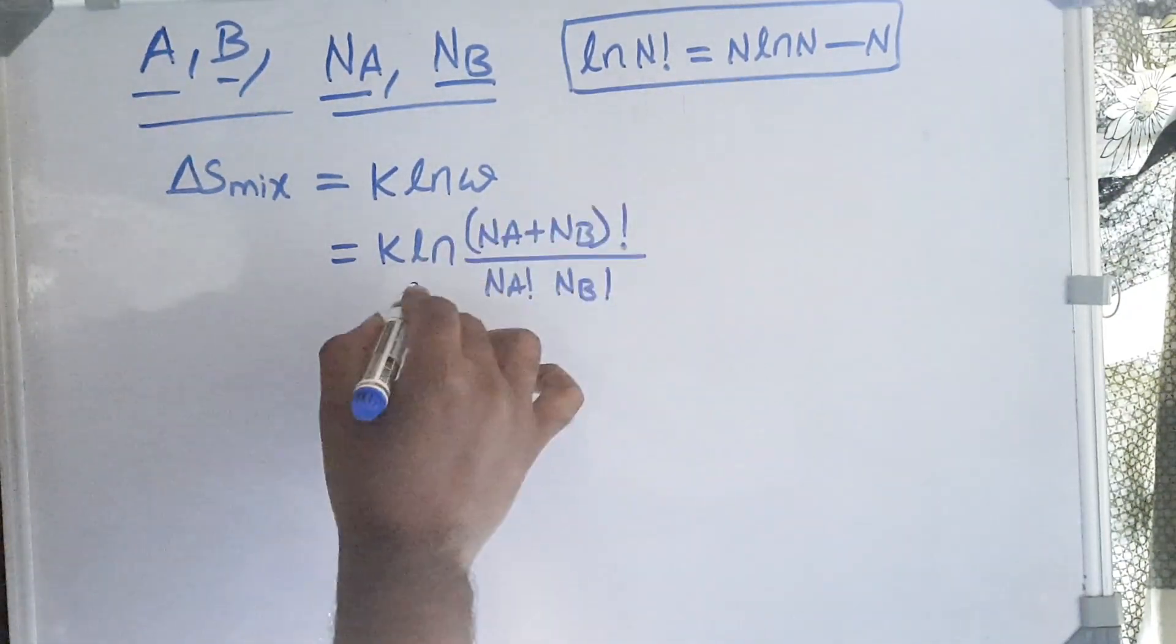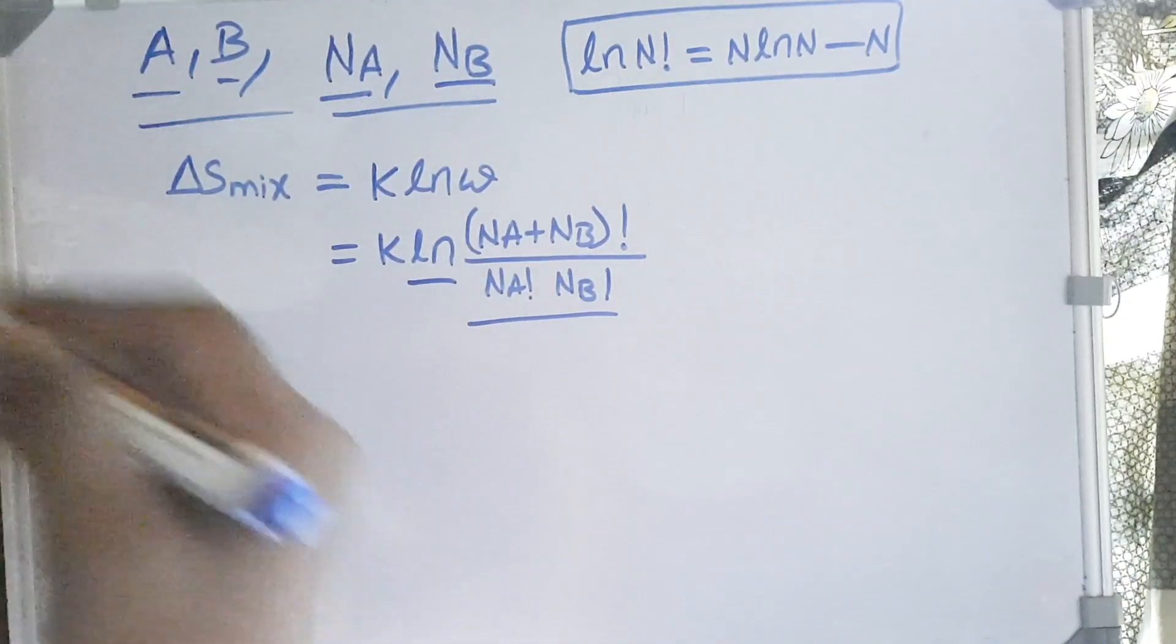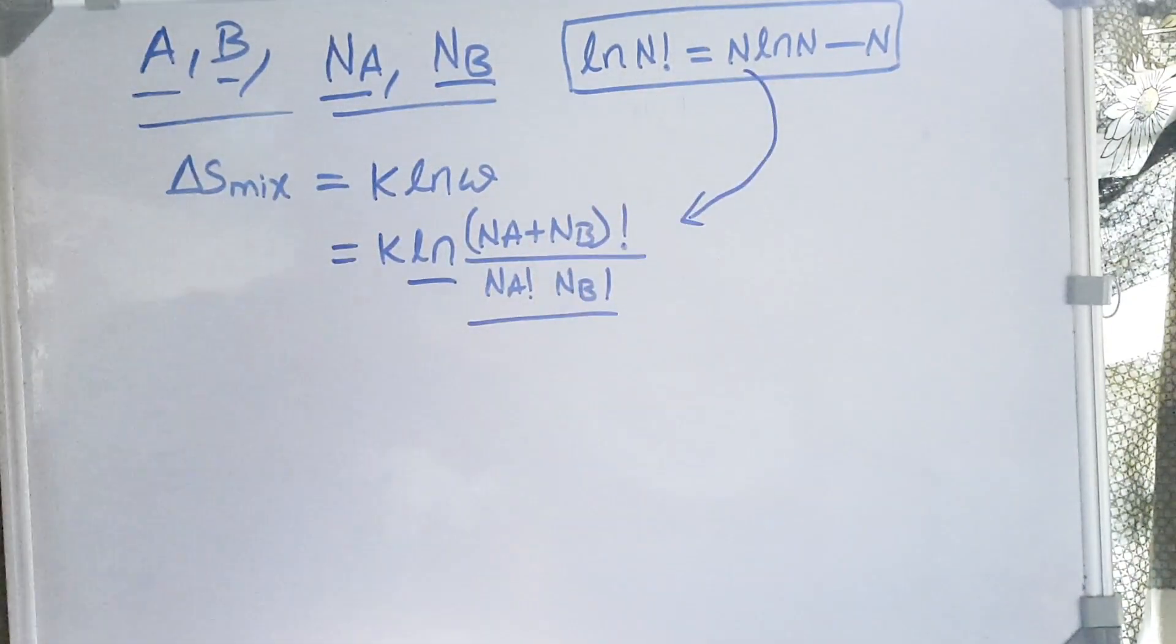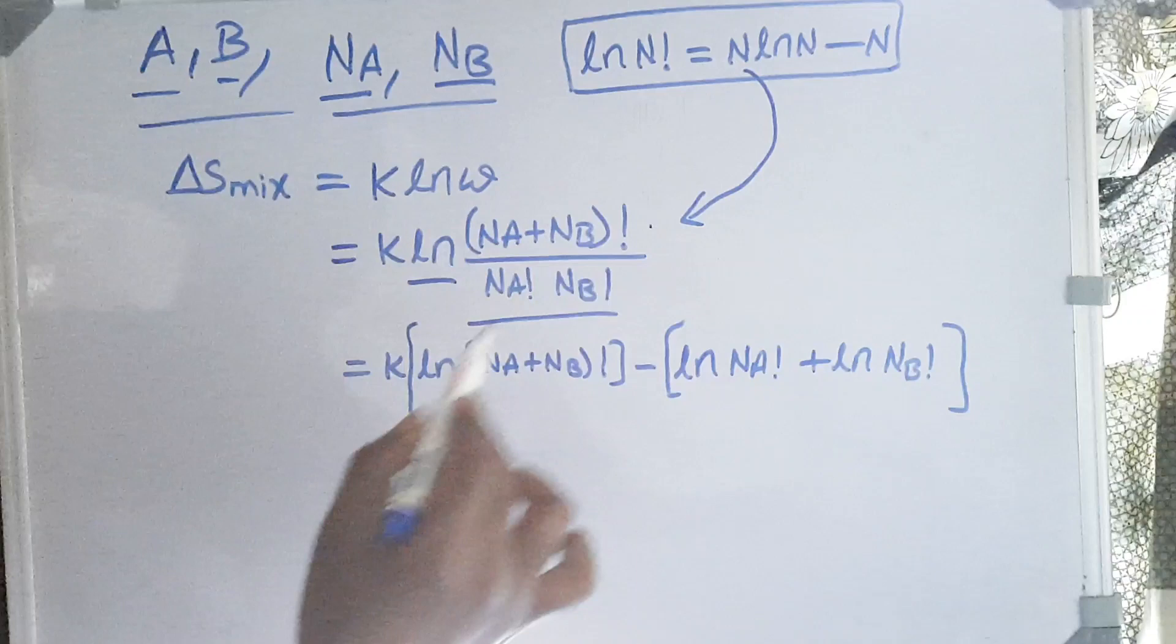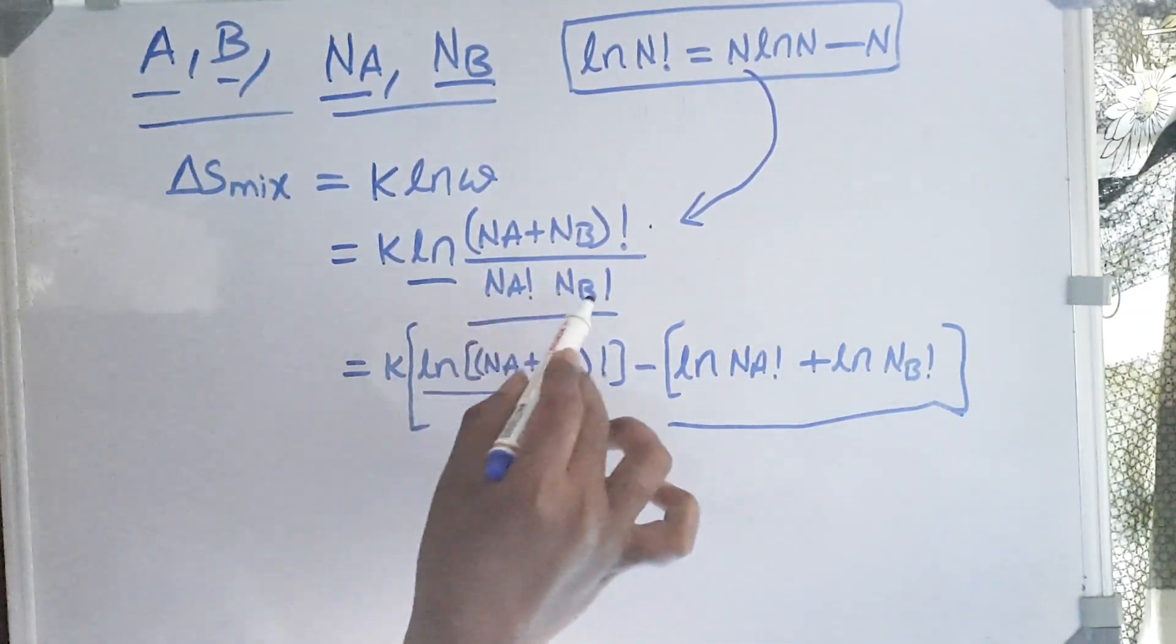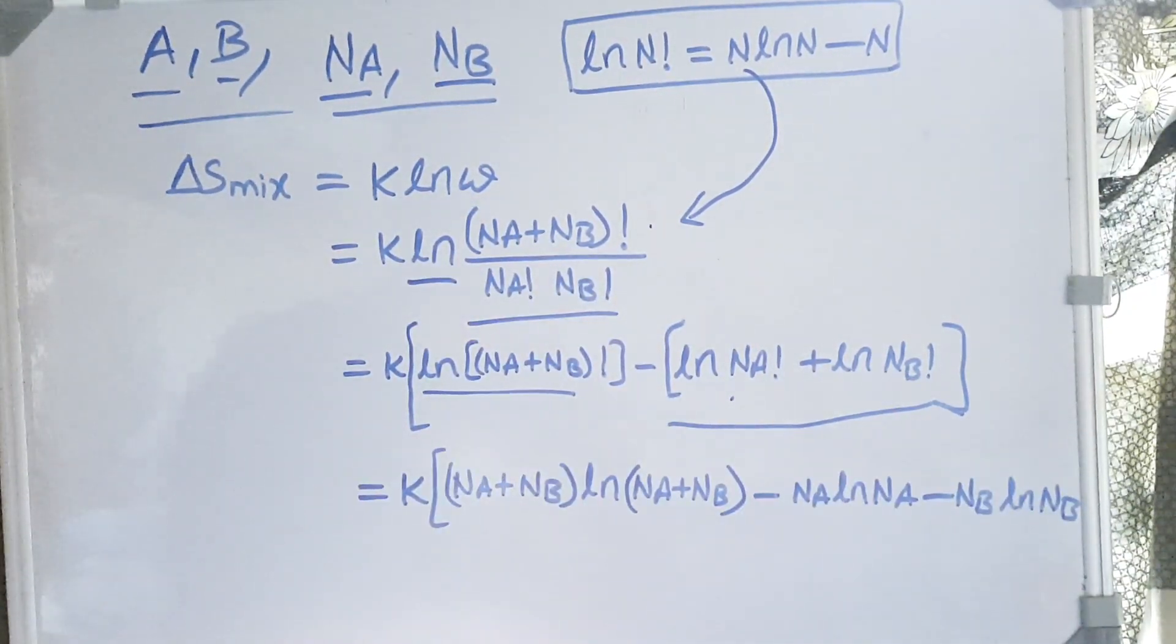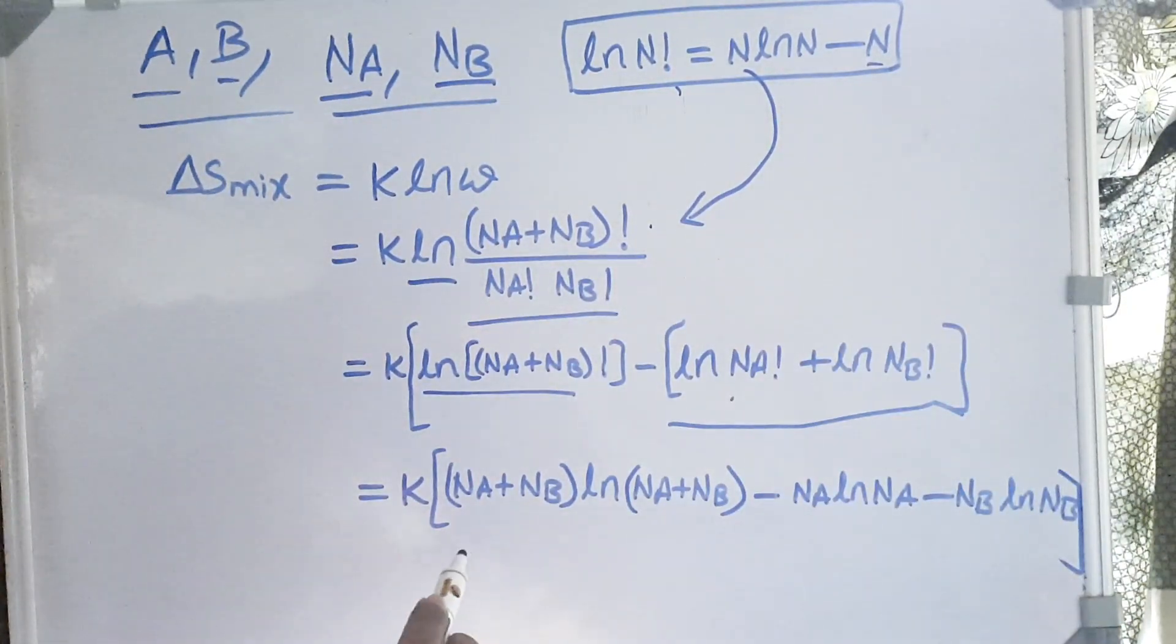Let's apply the logarithmic formula: ln(A/B) equals ln A minus ln B, and then we'll apply this formula into this equation. Here ln(A·B) equals ln A plus ln B. After applying this logarithm formula and cancelling out terms, we're going to get the final equation as this.